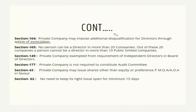Section 165 fixes the limit on the maximum number of directorships simultaneously held. No person can act as a director in more than 20 companies at the same time. Out of these 20 companies, a person cannot be director in more than 10 public limited companies. So there are two types of restriction: you cannot act as a director in more than 20 companies, and out of those 20, only 10 can be public limited companies.